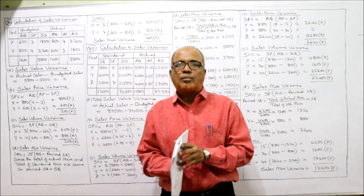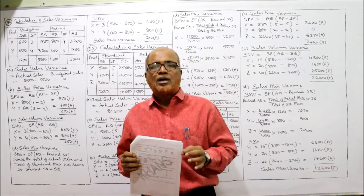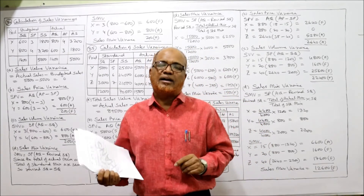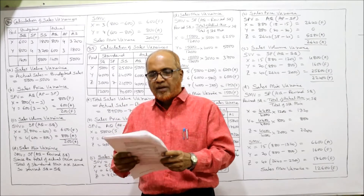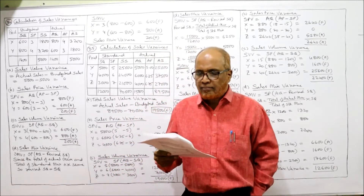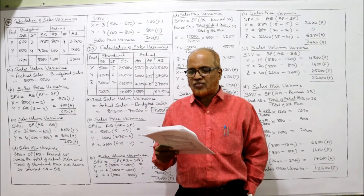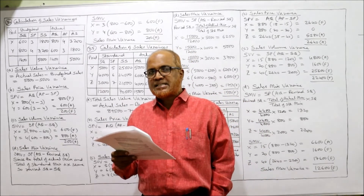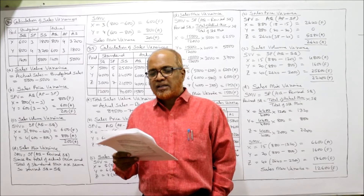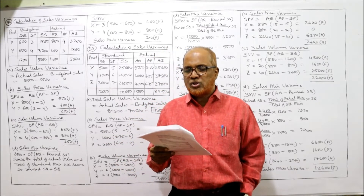34th problem. Before starting the problem, I expect my viewers to have a printout of the problems, which I have given in the link under my description. Keep the problems ready before watching. The budget and actual sales for a period in respect of two products are as follows. We are given two products X and Y — budgeted and actual. The budgeted quantity: 600 and 800. Budgeted price: 3 rupees and 4 rupees. Value: 1,800 and 3,200.